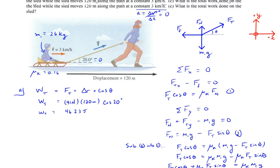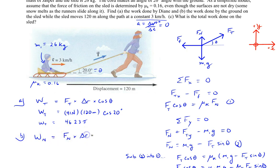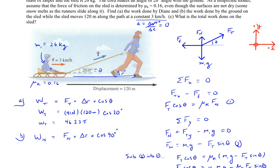Part B asks for the work done by the ground on the sled — really the normal force, which acts straight up perpendicular to the surface. The work done by the normal force equals the normal force times the displacement times the cosine of the angle between them. Since the normal force is straight up along the y-axis and the displacement is along the x-axis, the angle is 90 degrees. Cosine of 90° is zero, so there is no work done by the normal force — whenever a force is perpendicular to displacement, no work is done.